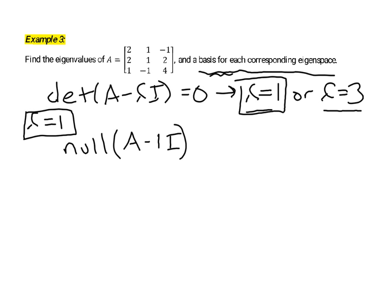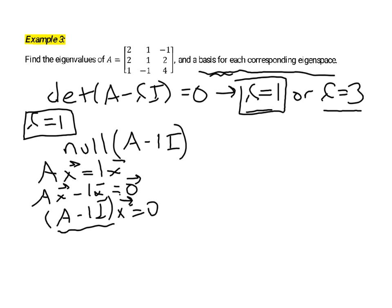The reason that we look at the null space of this matrix is because what we're finding is the set of vectors X, so that A times X is equal to lambda times X, in this case 1 times X. And when we move that over to one side, AX minus 1 times X equals the 0 vector, then I can write this as A minus 1 times I, X equals the 0 vector. And so now I've described the null space. The set of solutions to this homogeneous equation is the null space of this matrix A minus lambda I. So that's why we're looking at the null space.